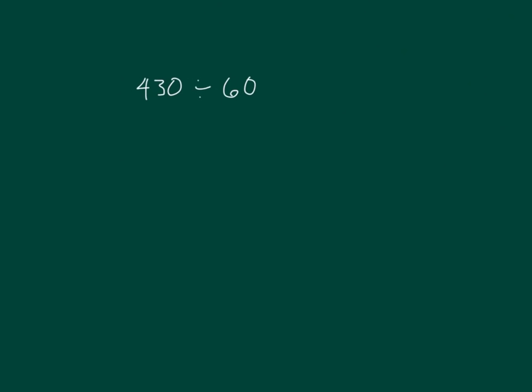Here we have 430 divided by 60. What's our whole? Right, 430. We need a multiple of 60 to make the division easy. Let's do our estimate first. Did you say 420? 420 divided by 60 is the same as 42 divided by 6, which is 7. We'll use that to help us with our actual division.